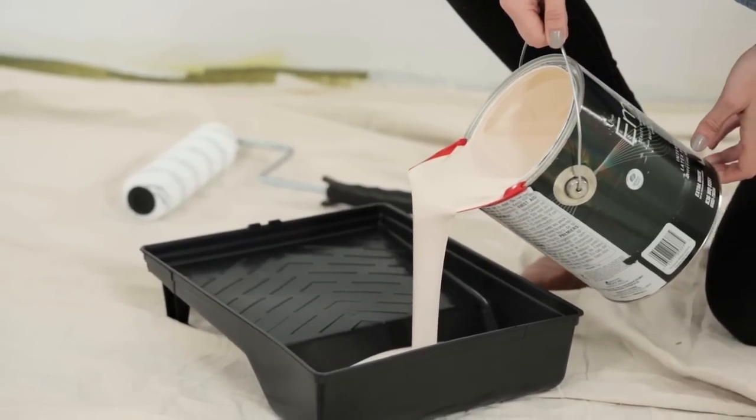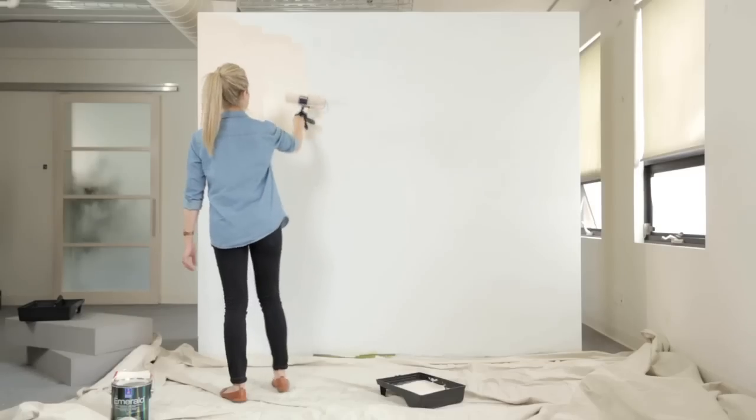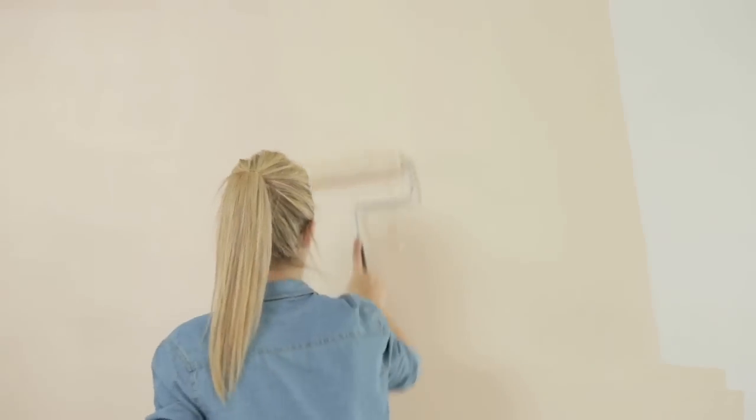I started with Sherwin-Williams Aristocrat Peach first. This paint is great because Emerald Interior acrylic latex paint is resistant to water streaking and spotting. It's washable, resistant to stains, and has a smooth finish. Everything I'd need in a paint.